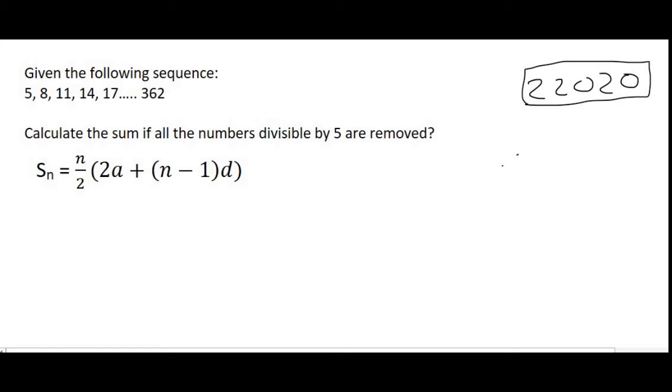Now, what we're going to do is take out all the numbers that are divisible by 5. So, that's going to be this 5 in the beginning. Then, what I'm going to quickly do is just carry on the sequence quickly. 11, 14, 17.